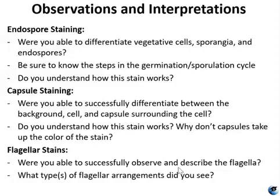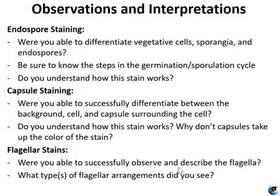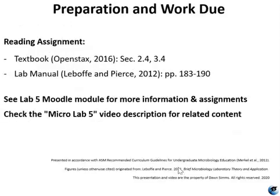For your observations and interpretations: be able to differentiate vegetative cells, sporangia, and endospores; know the steps of germination and sporulation; understand how the endospore stain works. For capsules, differentiate the cell, capsule, and background, and know why capsules don't take up acidic or basic dye. For flagella stains, note whether you could see them, describe the flagella, and identify the arrangements observed. Thank you for watching — don't forget to do the reading, and check the description for more related videos. Leave your questions in the comments below.